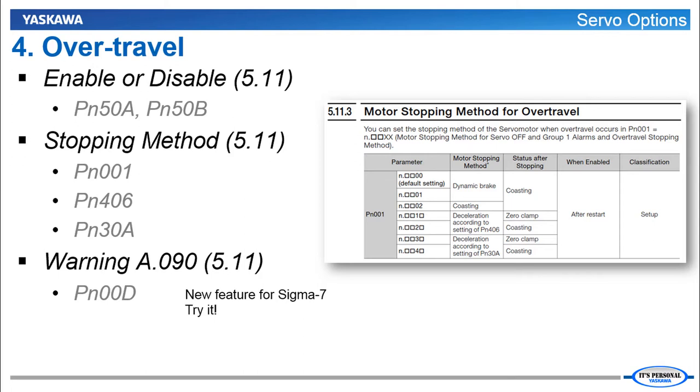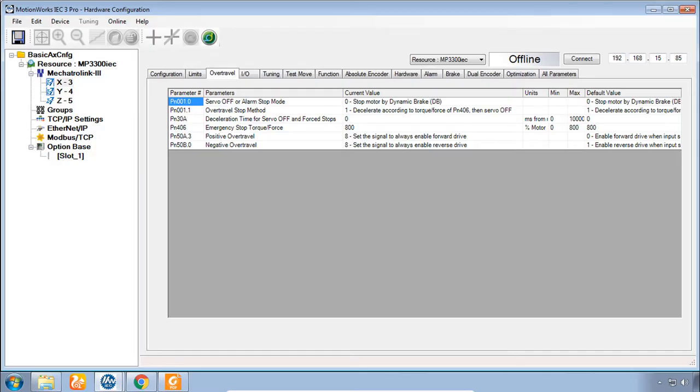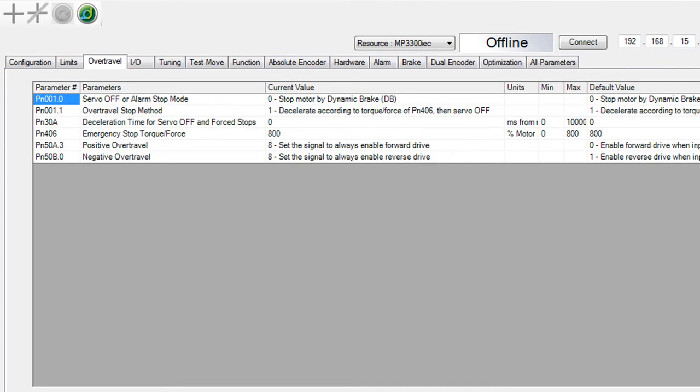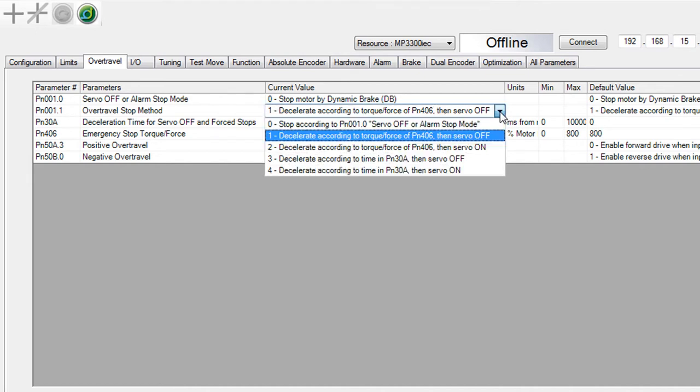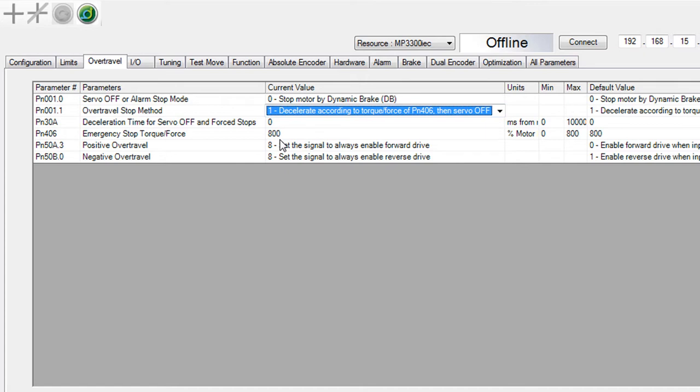And new here in Sigma 7 you can have a warning appear in the amplifier. In MotionWorks IEC hardware configuration. Most of these are in the over travel tab. Of course in the previous video we had you guys set these to off to enable the forward direction. But also in this list is the emergency stop torque force. And you can choose to have the motor stop that way. That is the default here. Stop with the torque set in this parameter.